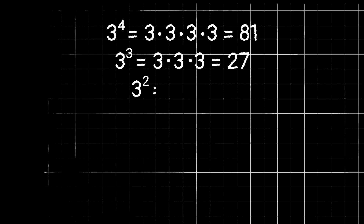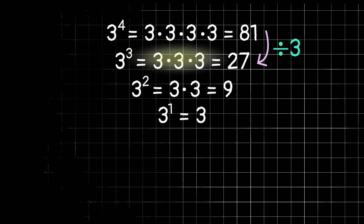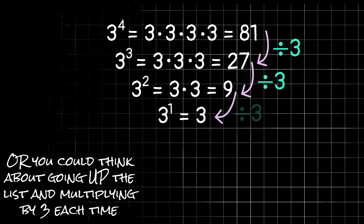3 to the 2nd power, or 3 squared, gives us 3 times 3, which is 9. 3 to the 1st power would just be 3. Notice how as we move down this list, decreasing the exponent by 1 each time, the result ends up being divided by 3 each time.